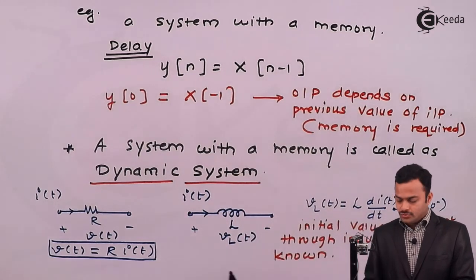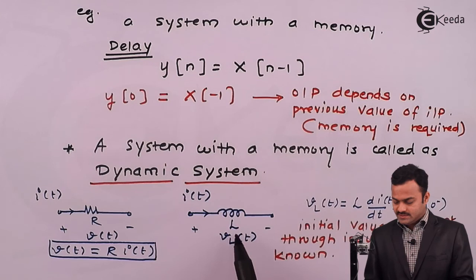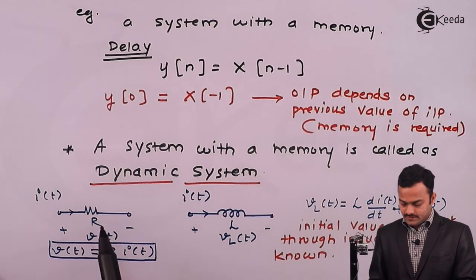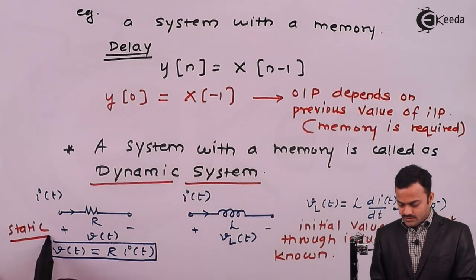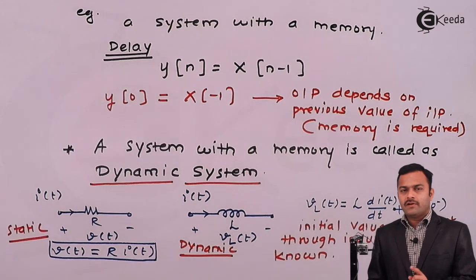I can say initial value should be known, that means I need to have a memory hence this system will be a dynamic system. But the resistor system will be static, so this is static and this is dynamic.